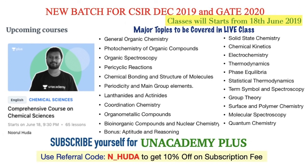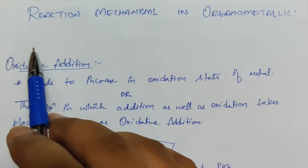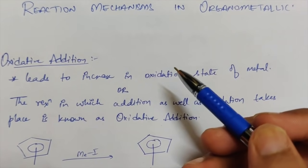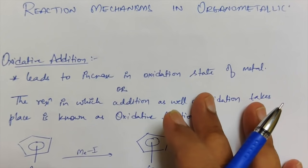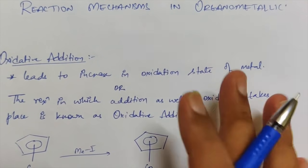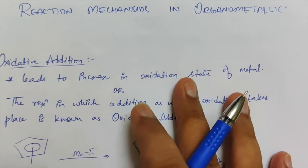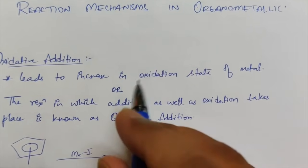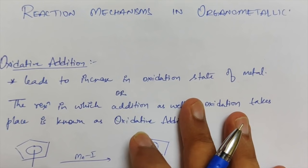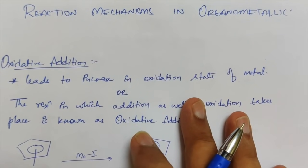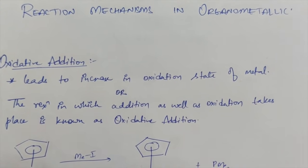Now let's continue with our video. In this particular video I am going to discuss about the reaction mechanism in organometallic chemistry. I have already covered this topic on my Unacademy free lessons, but if you are new to this channel and have not yet studied this particular topic, this video is going to help you. I will cover all the reaction mechanisms in organometallic chemistry and explain some questions based upon these mechanisms for the CSIR-NET exam.